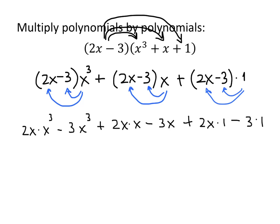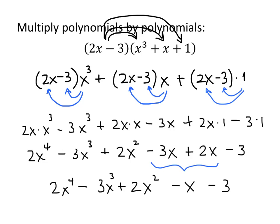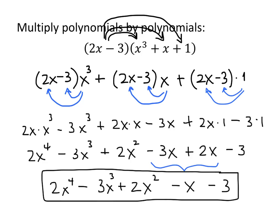Now let's simplify all these terms. 2x times x cubed: x times x cubed is a total of 4 x's all being multiplied together, so that's 2x to the fourth. Minus 3x cubed. x times x is x squared. Minus 3x. 2x times 1 is just 2x. And 3 times 1 is just 3. And then finally, all we have to do is collect like terms. The only like terms here are the x's: negative 3x plus 2x is negative x. Everything else just gets copied down, and there's our answer. So there are a lot of steps, but it's really just distributing, simplifying, and then collecting like terms. Follow these steps and you'll be successful. Thank you.